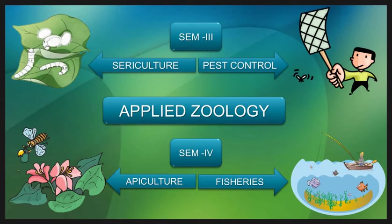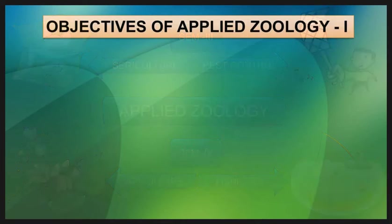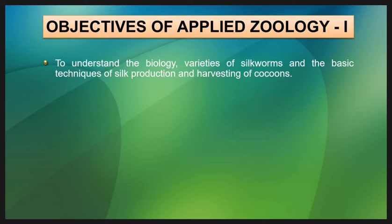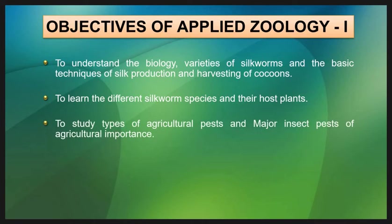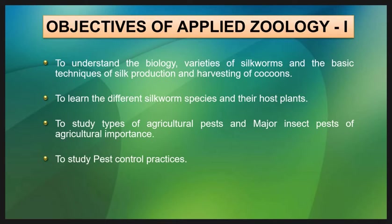Now let us look at the objectives of sericulture and pest control practices. The first objective is to understand the biology and variety of silkworm and the basic techniques of silk production and harvesting of cocoon. The second objective is to learn the different silkworm species and their host plants. The third objective is to study types of agricultural pest and major insect pests of agricultural importance. The last objective is to study pest control practices.